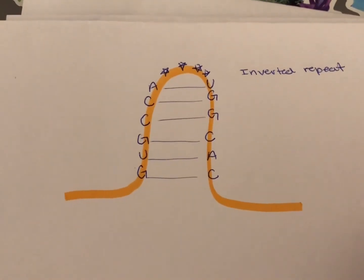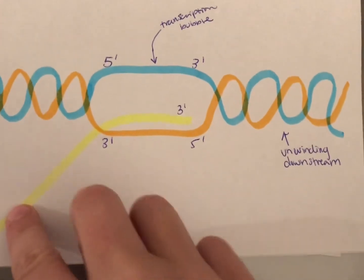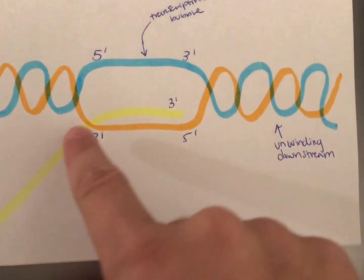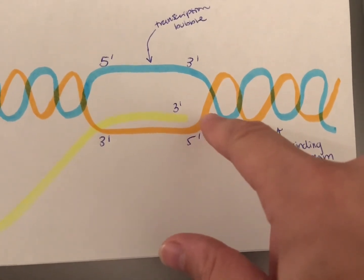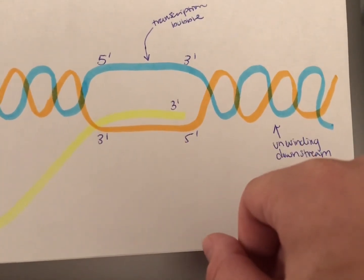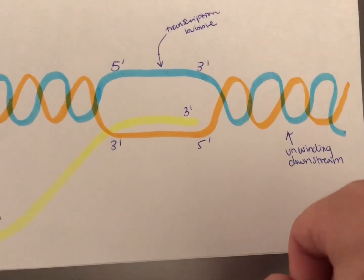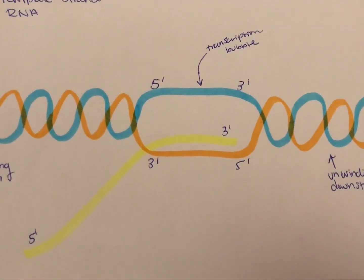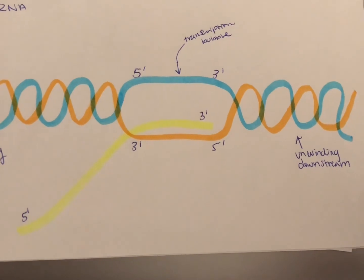The second form of termination is rho-dependent termination. In this type, rho will attach to the RNA strand around here and start moving towards the transcription bubble. Once it reaches the transcription bubble, helicase activity begins, causing the DNA and RNA to unwind and therefore transcription to terminate. And that's a quick overview of transcription in prokaryotes. Thanks for watching!